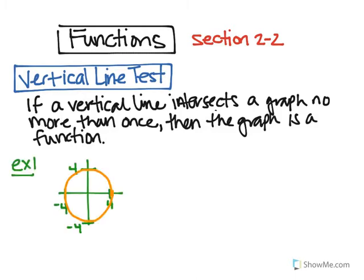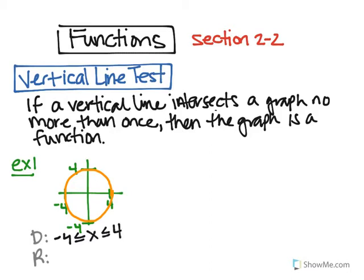Here's an example. We have this circle, and before we determine whether it's a function, I want to review domain and range since this is a big part of the chapter. Remember, the domain is what it spans along the x-axis. The circle's diameter is between negative 4 and 4, so the x values would be between negative 4 and positive 4, and it can equal both of those. The range also extends between negative 4 and 4 — those are our y values, so it's the same.